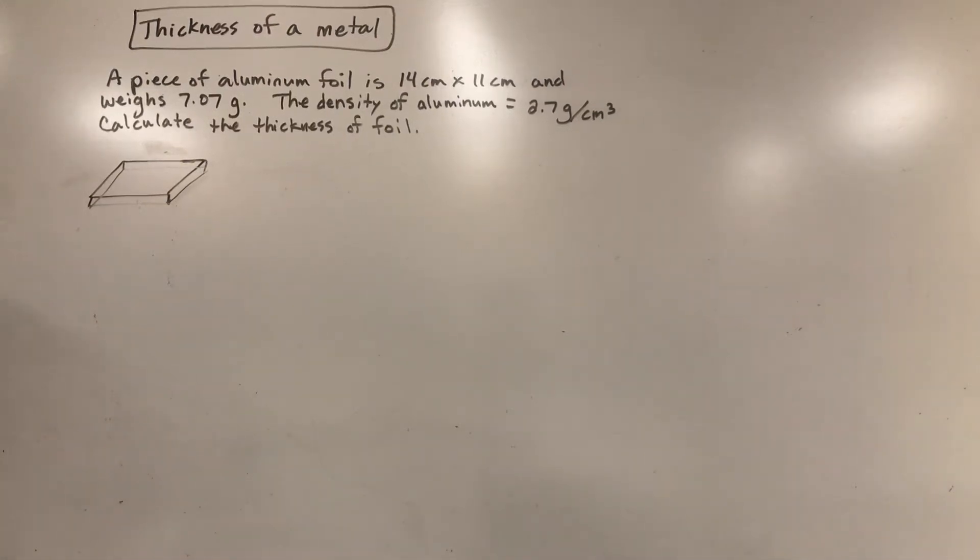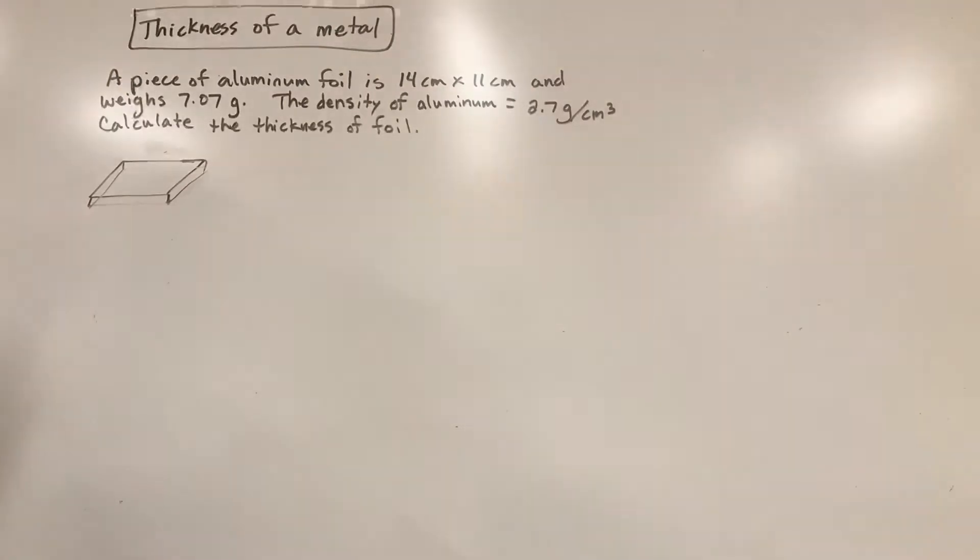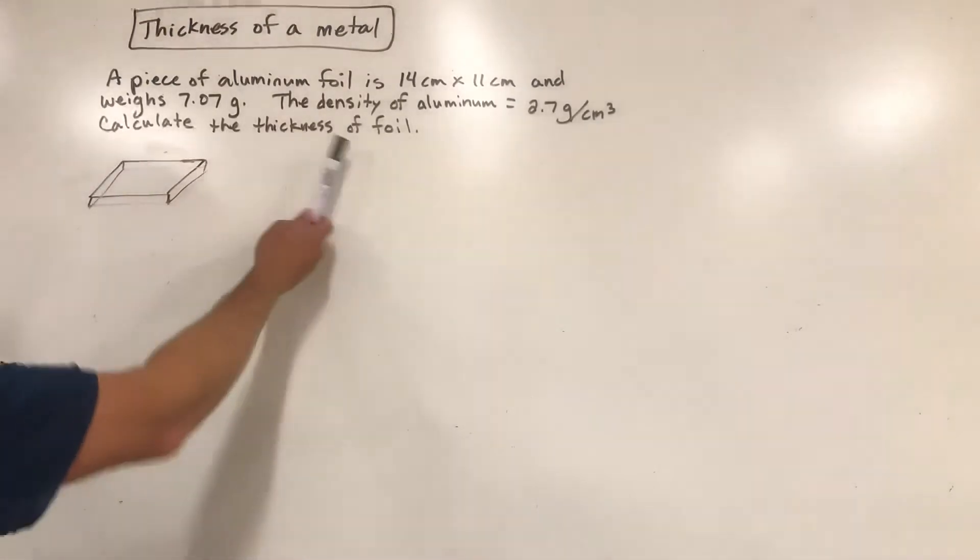One common problem for students in this course is figuring out the thickness of a metal when you're given some measurements to work with. Typically this is a combination of both volume and density, and you have to arrange it in a way to logically get yourself to a conclusion. This says a piece of aluminum foil, we've all dealt with aluminum foil, is 14 centimeters by 11 centimeters, so we have a rectangle of aluminum foil. It gives a weight, 7.07 grams, and a density of 2.7 grams per cubic centimeter. Use this information to calculate the thickness of the foil.